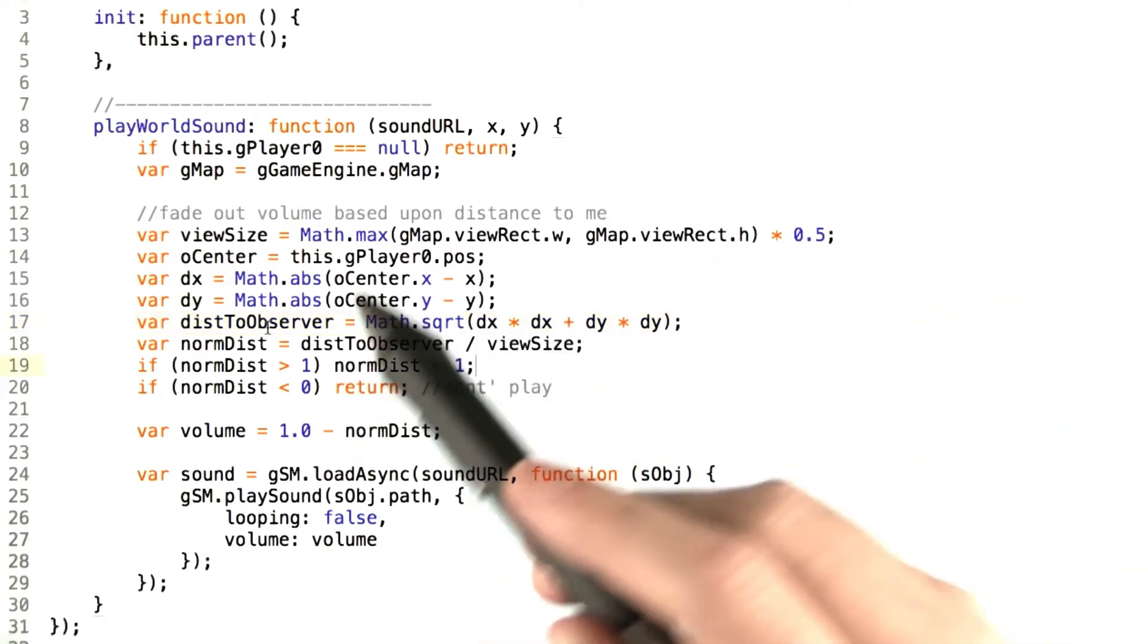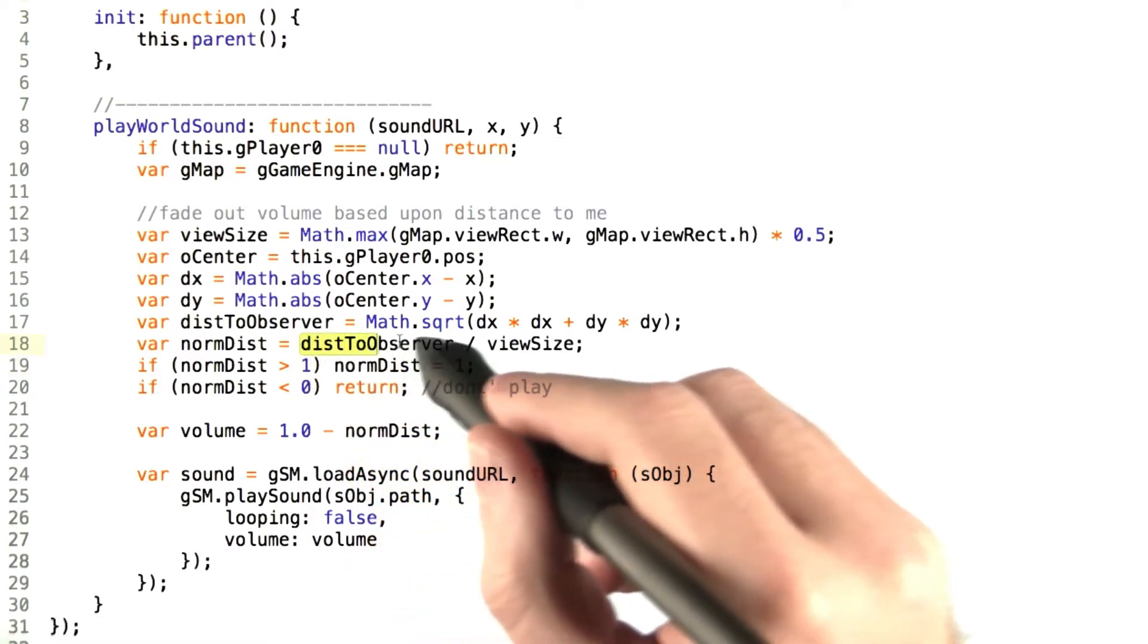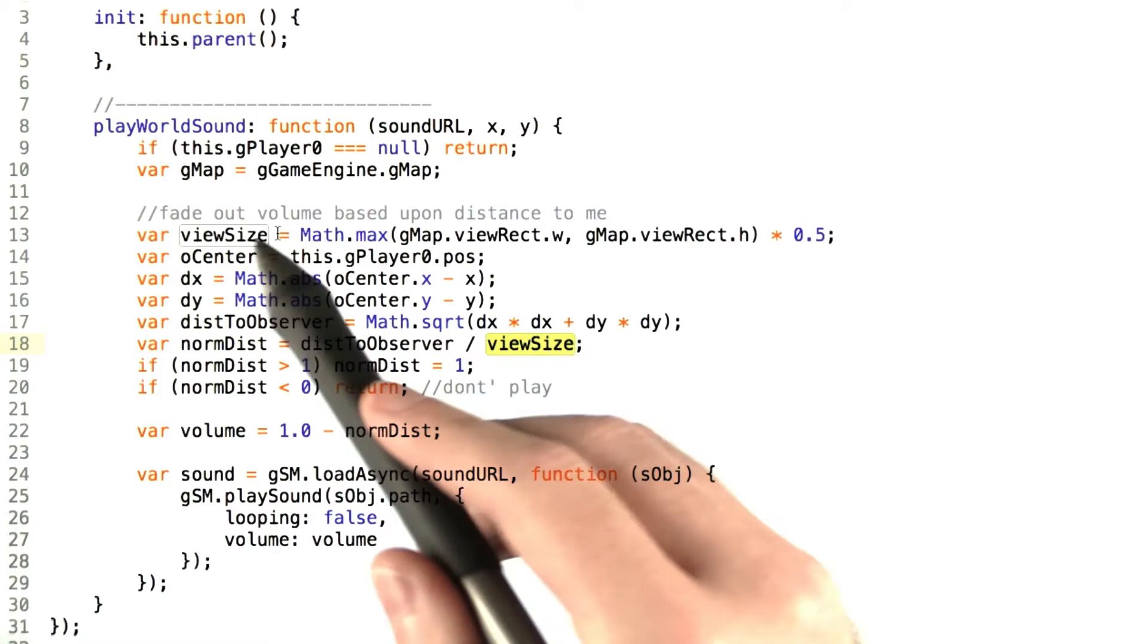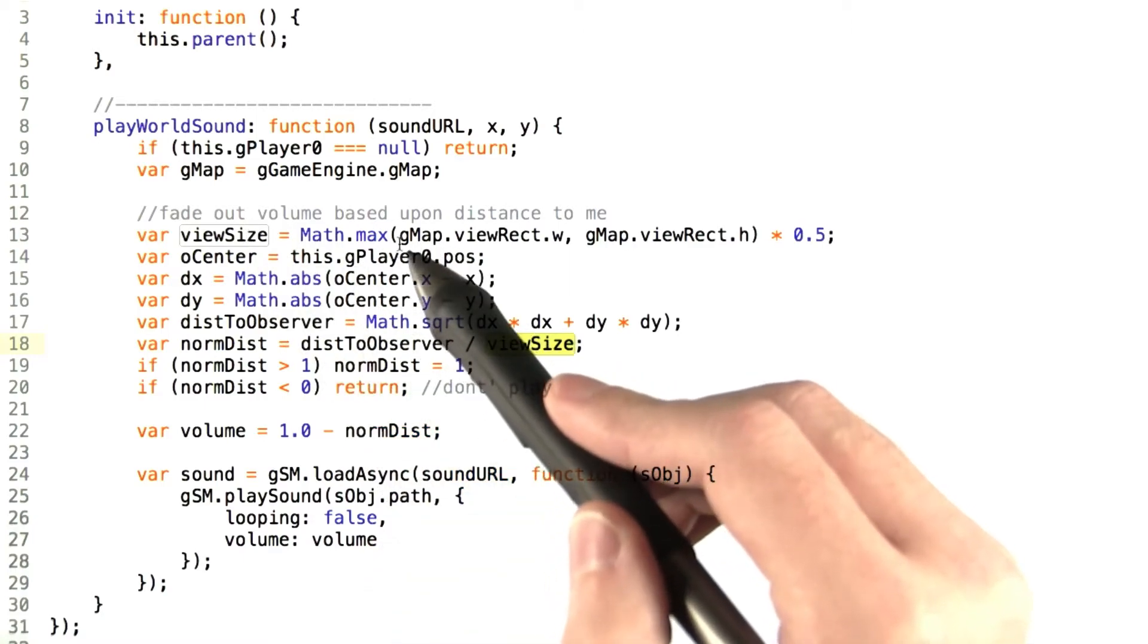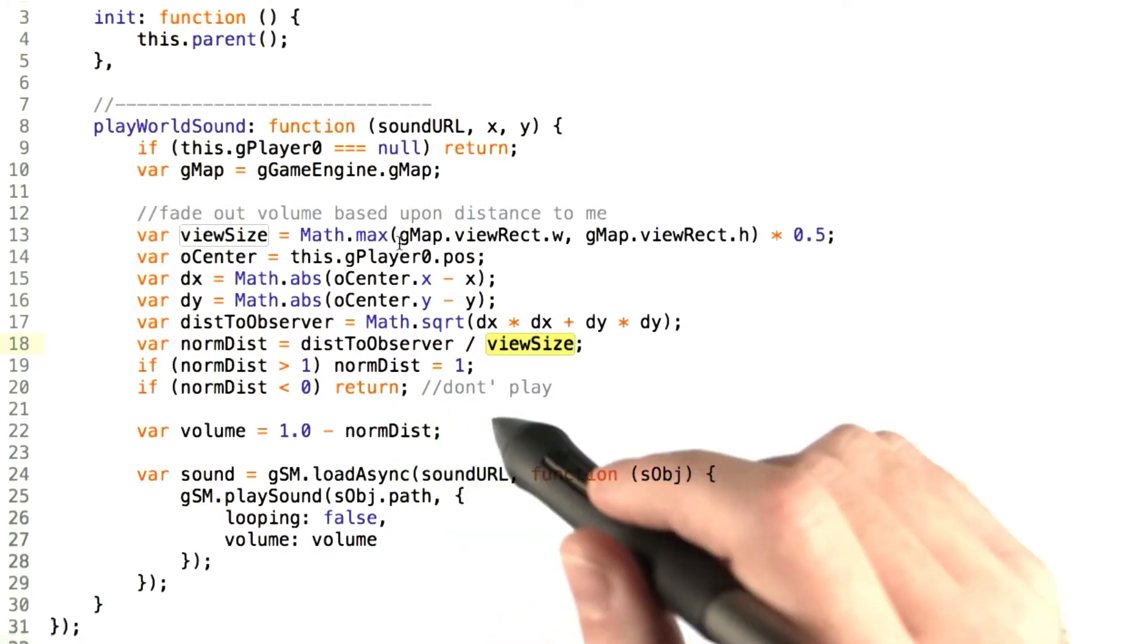We're going to normalize that distance. What we mean by that is we take the distance to the observer that we've just calculated and divide that by the view size we calculated earlier to see how many view sizes from the player we are.